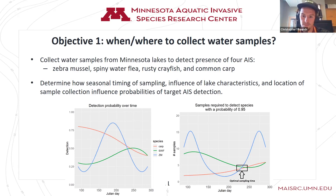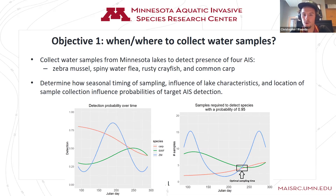At the optimal window, you can see it would be something like five samples needed to achieve a 95% probability of detecting all of our species. And this is kind of what we're going to end up doing with our four species once we have all of our data back.